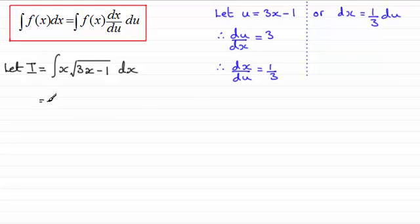What we have here is the integral of x. Now x can be found if we take this formula and rearrange it. So I'll just put here also, by rearranging this for x, we can see that x would be equal to u plus 1, all divided by 3.